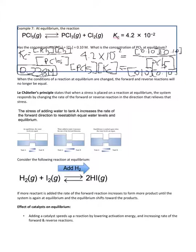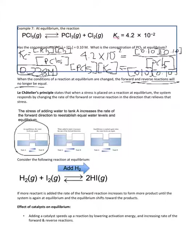What happens when the conditions of a reaction at equilibrium are changed? The forward and reverse reactions will no longer be equal. Le Chatelier's principle states that when a stress is placed on a reaction at equilibrium, the system responds by changing the rate of the forward or reverse reaction in the direction that relieves the stress and allows it to get back to equilibrium. For example, if you have two tanks of water at equilibrium and you add water to tank A, the water flows through the connecting pipe until both tanks are equal again.